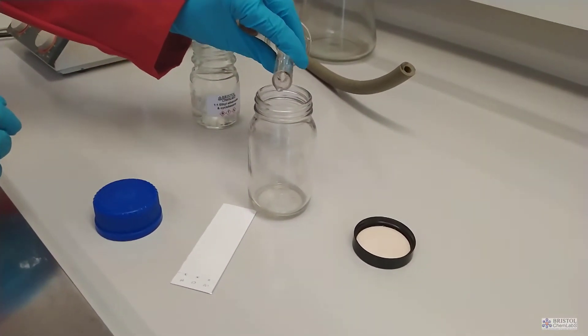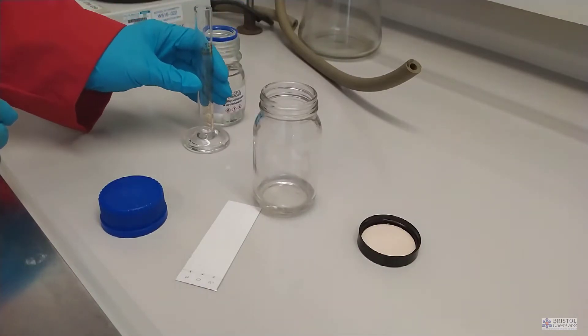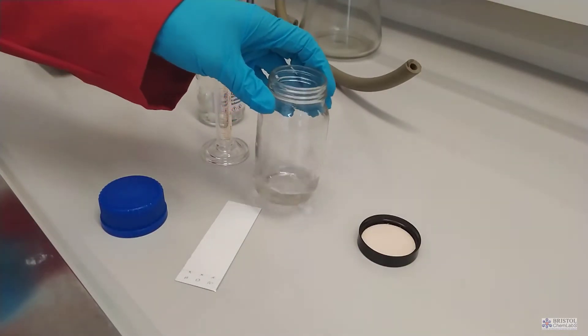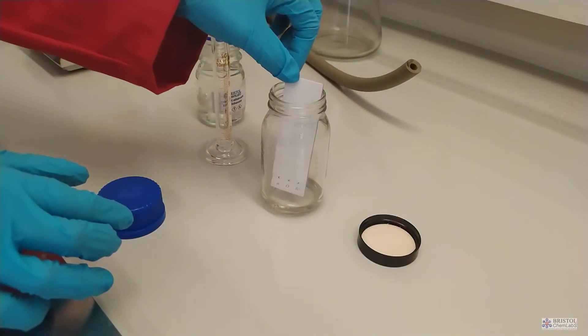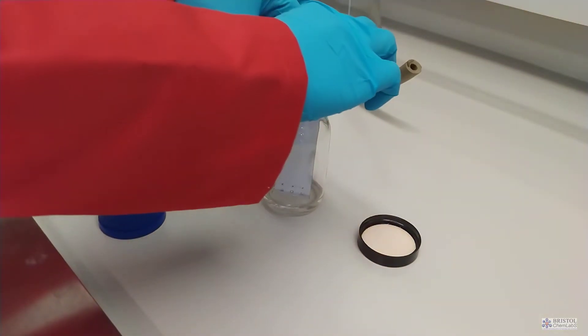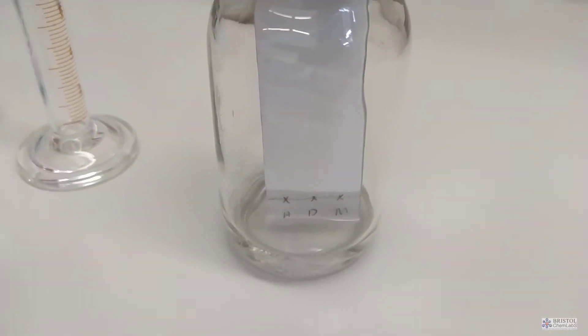After a while the solvent mixture passes up through the alumina of the TLC plate and depending on the intermolecular bonding of your samples it will progress up the plate at different rates. And we stop the TLC before the solvent front gets to the top of the plate.